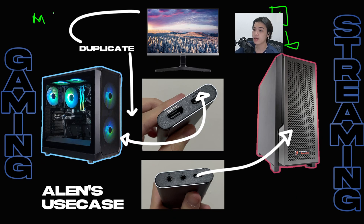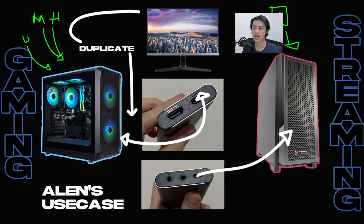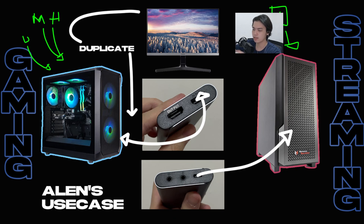My microphone and headphones are both connected to the gaming PC because I run Discord on the gaming PC too. When I'm not streaming, the streaming PC is off, so I want to do everything on my gaming PC — game, work, talk to friends. When I am streaming, I pop open the streaming PC and my screen gets mirrored to it, then that mirrored screen gets streamed to the internet. OBS and all alerts are on the second PC.